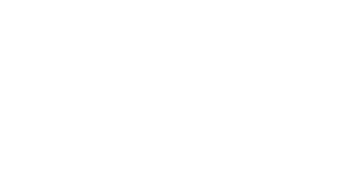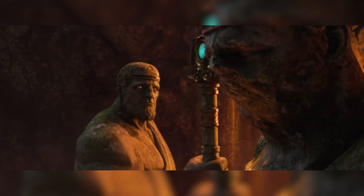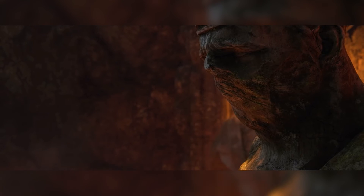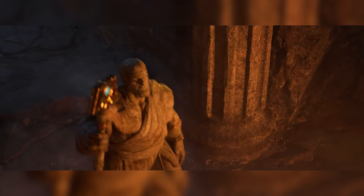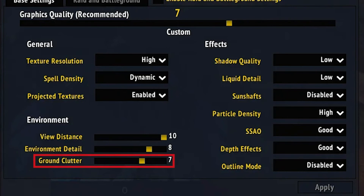Fix number nine: reduce ground clutter. Ground clutter controls the density and the distance at which ground clutter items, like grass and foliage, are placed in game. Reduce this to improve performance and avoid FPS drops.